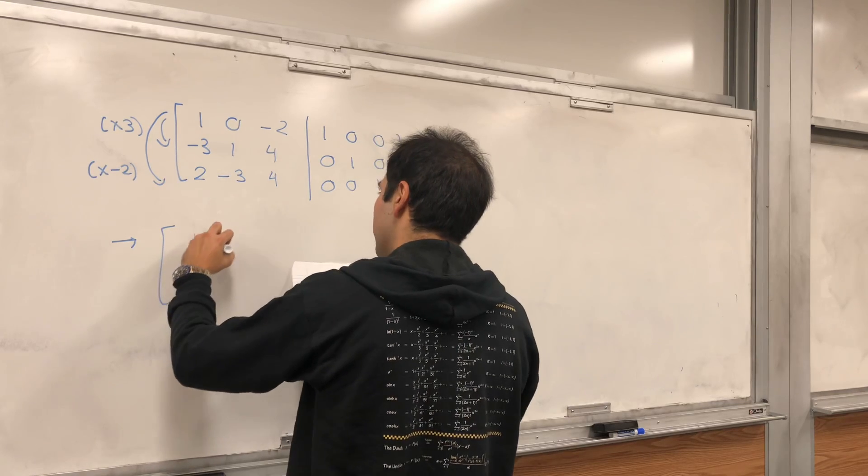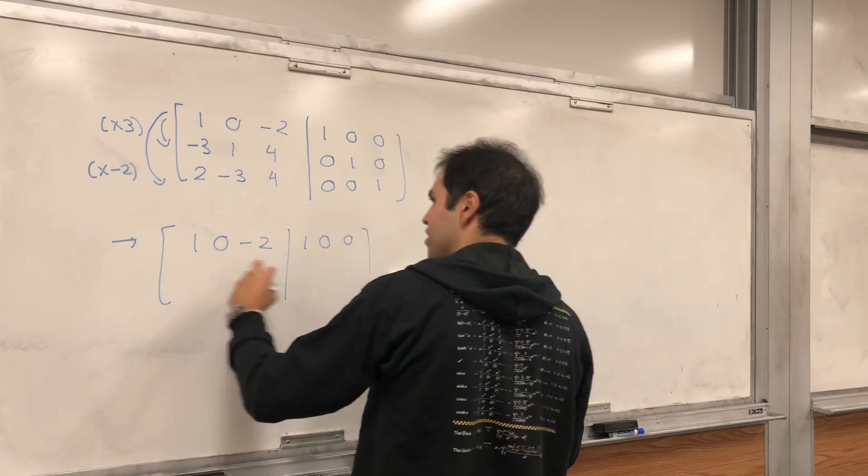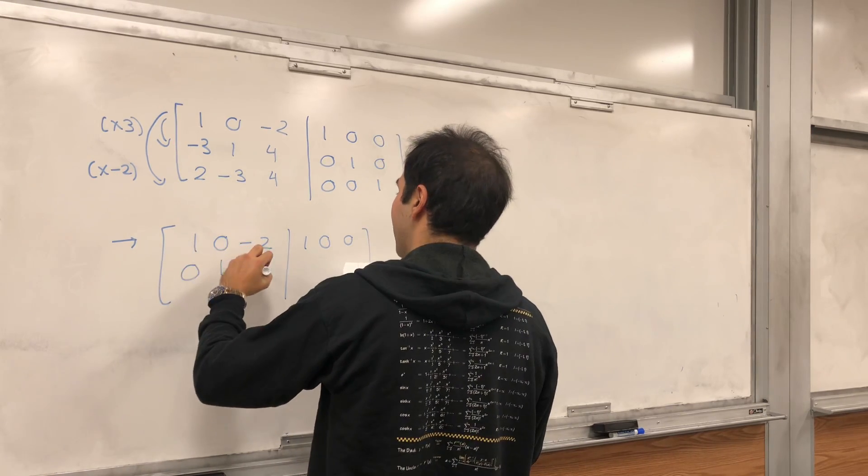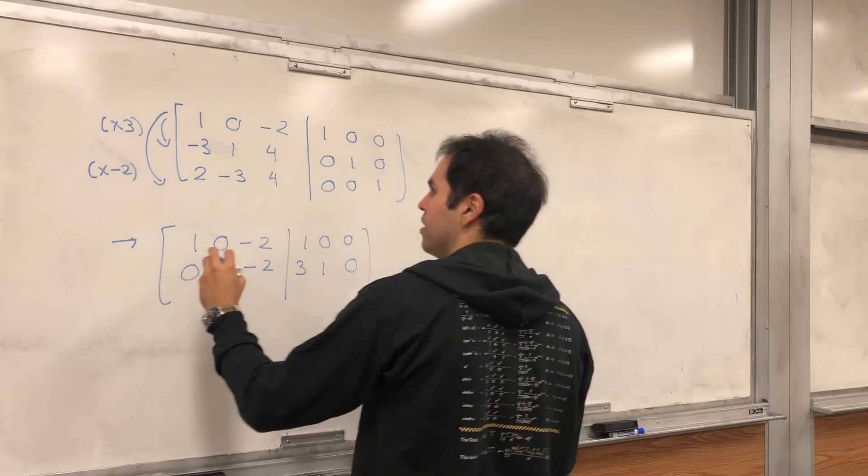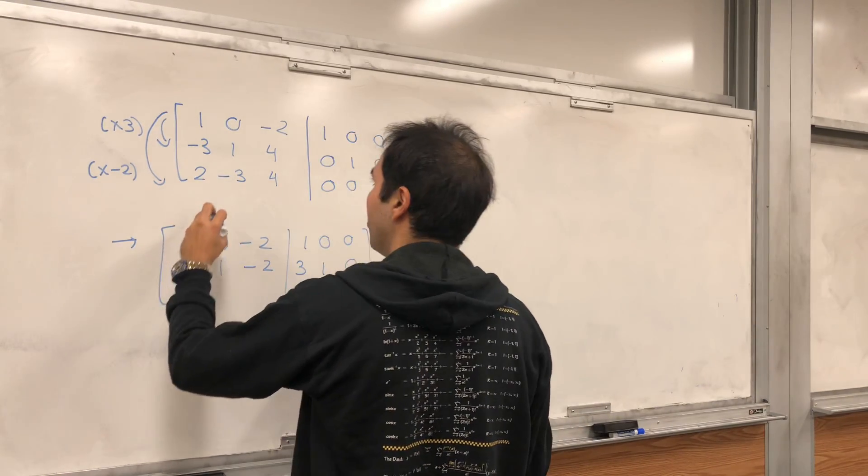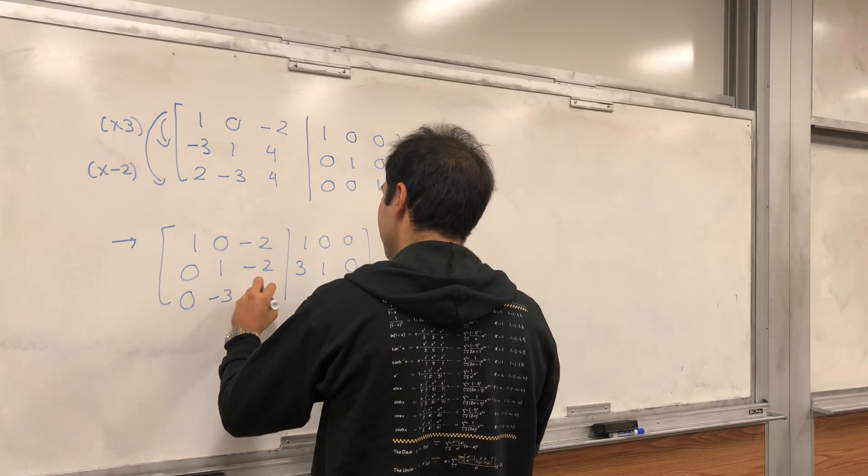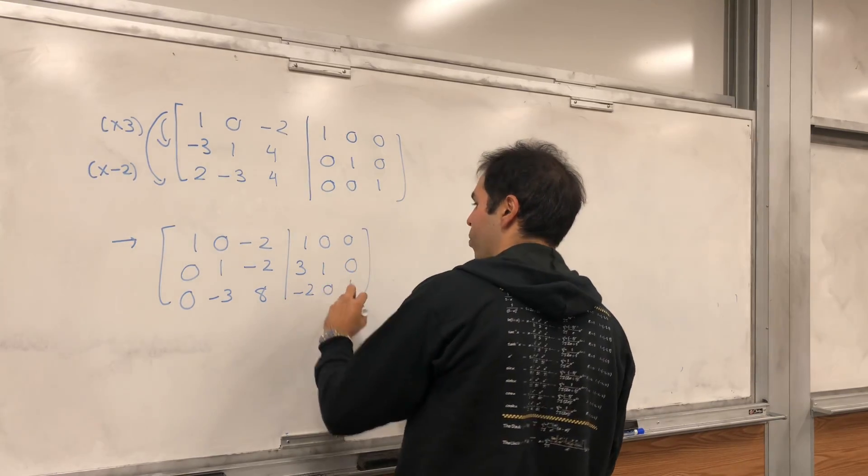and then we get 1, 0, minus 2, 1, 0, 0, and then I believe, let's see, 0, 1, and then minus 2, and then 3, 1, 0, and lastly, 0, minus 3, and then 4 plus 4, which is 8, and then minus 2, 0, 1.